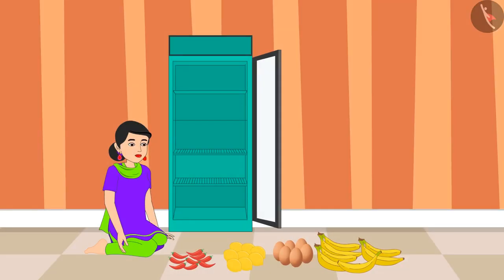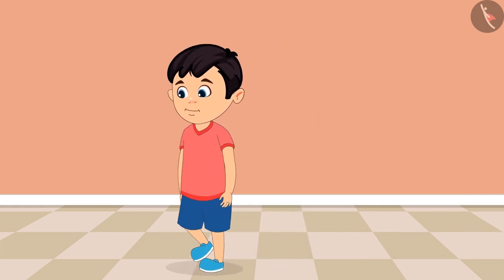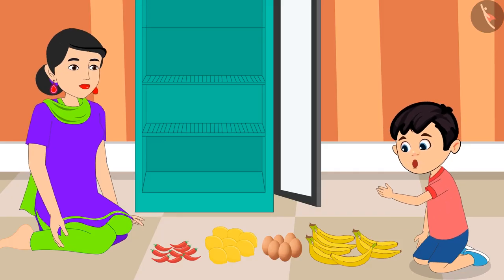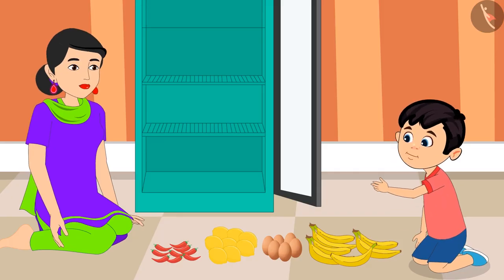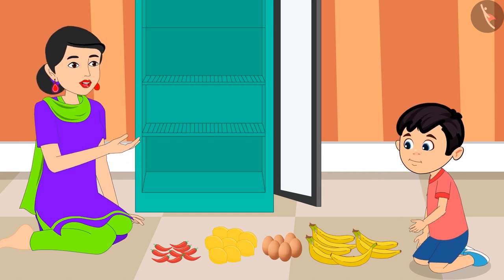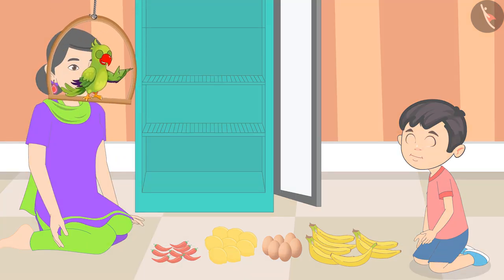Today Chotu's mother is cleaning the refrigerator. She has kept all the items out of the refrigerator. Chotu comes to help her: 'Mom, can I help you put all this stuff back in the refrigerator?' 'Yes Chotu, why not! First, one by one, count each item and tell the number of that item.' Come on, let's count the number of these items with Chotu.